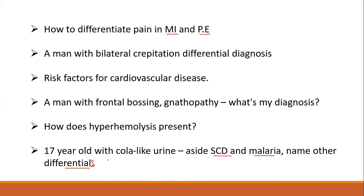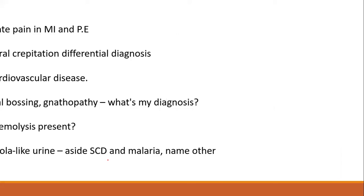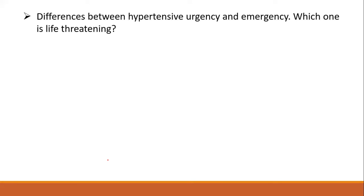When mentioning a disease, make sure you have strong knowledge about it because they can do a follow-up based on what you say — very important. Then, differences between hypertensive urgency and hypertensive emergency, and which one is life-threatening. Hypertension is a very high-yield topic — know the risk factors, both modifiable and non-modifiable, very well.